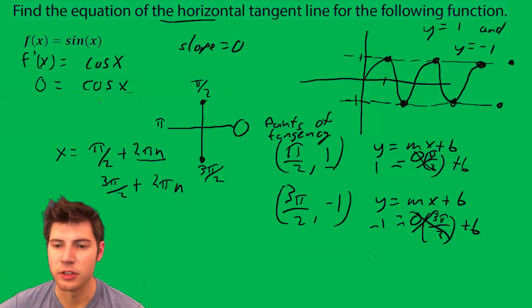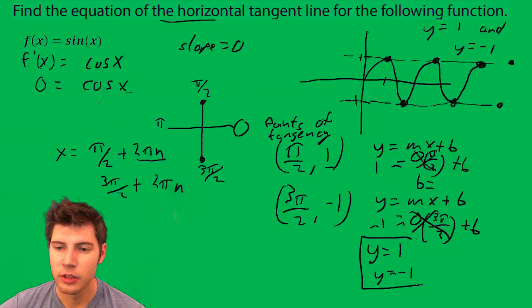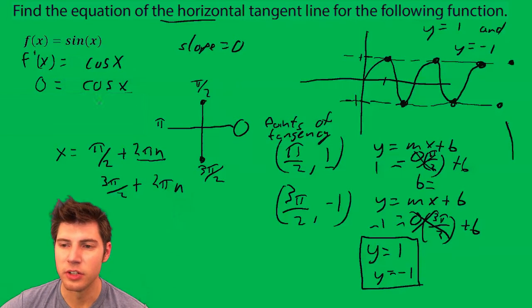So our answers are y equals 1 because b equals 1 here, and y equals negative 1. So here it is, the visual for why that is, and then here's how we did the calculus to solve it.